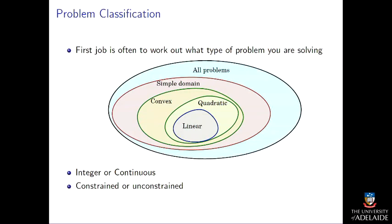That process, applied to optimization, essentially requires you to take your problem — be it something in machine learning, something industrial, or something in biology — and figure out what type of optimization it involves. Optimization is super broad.